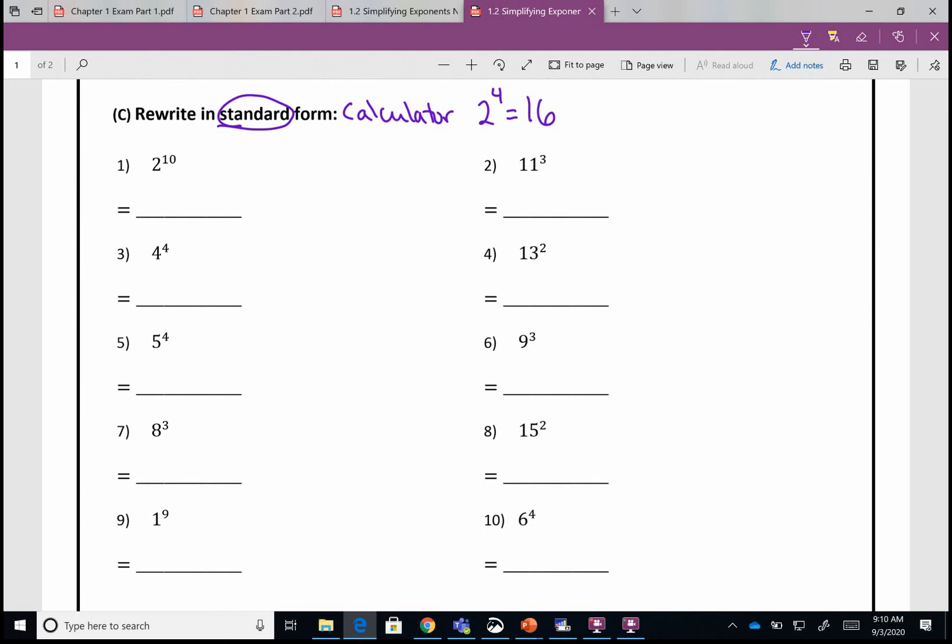So we have two to the tenth power is 1024, 11 to the third power is 1331, four to the fourth power is 256, 13 to the second power is 169.